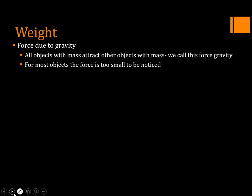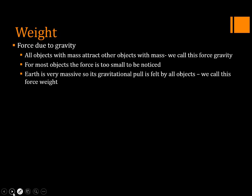For most objects, the gravitational force is too small to be noticed. We don't notice the gravitational attraction between us and our neighbor, but there is one. We don't notice it between our book and a pencil, but there is one. We do notice the gravitational attraction between a pencil and the floor because the Earth — which is huge and has a lot of mass — is what's pulling that pencil down, and its gravitational pull is felt by all objects near it.